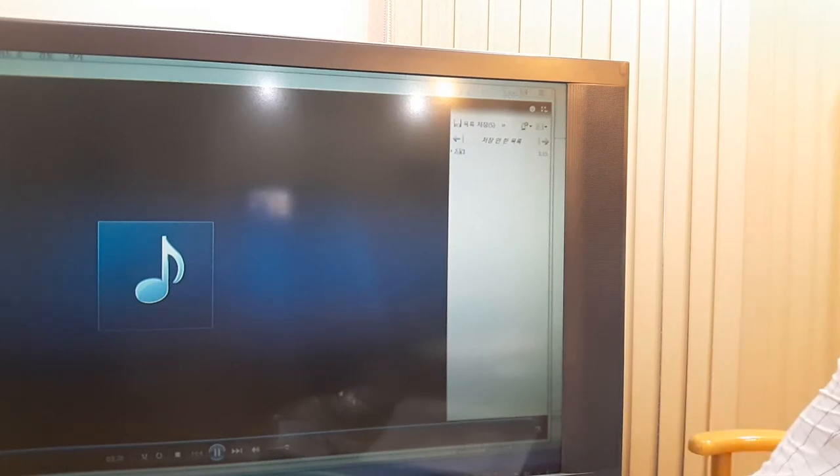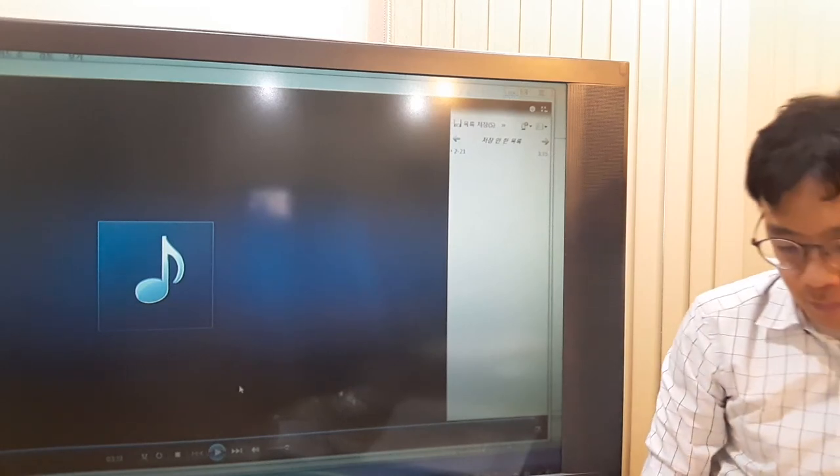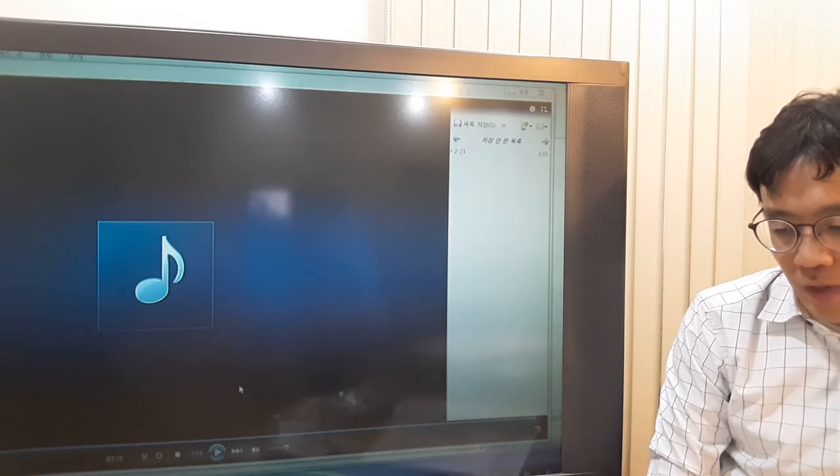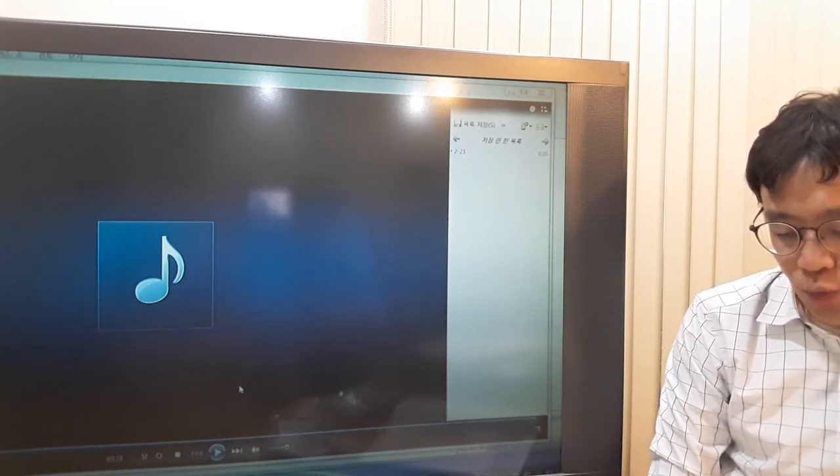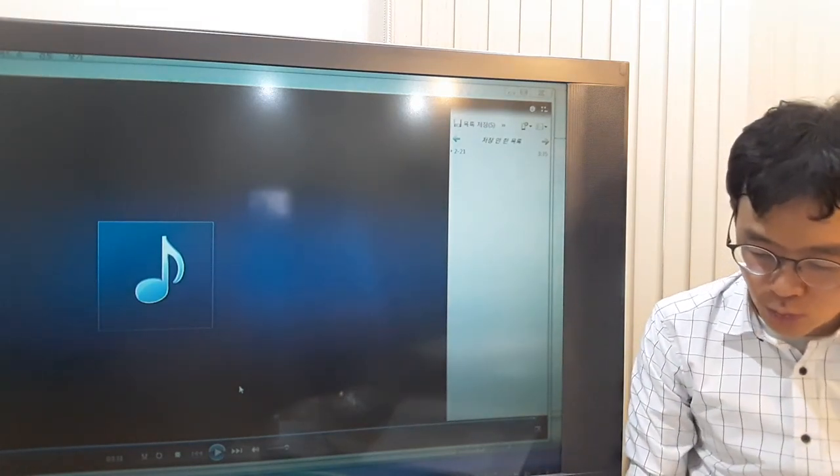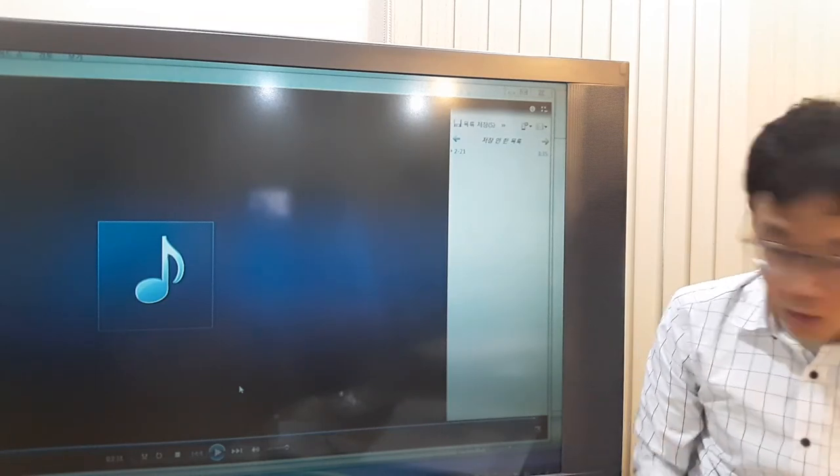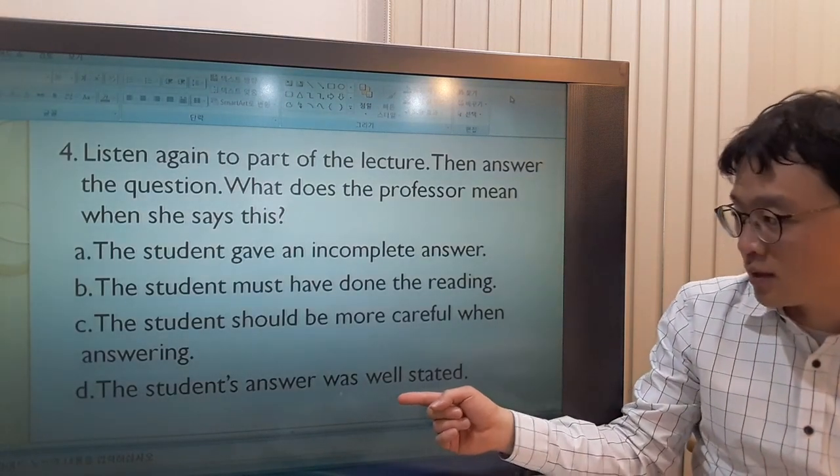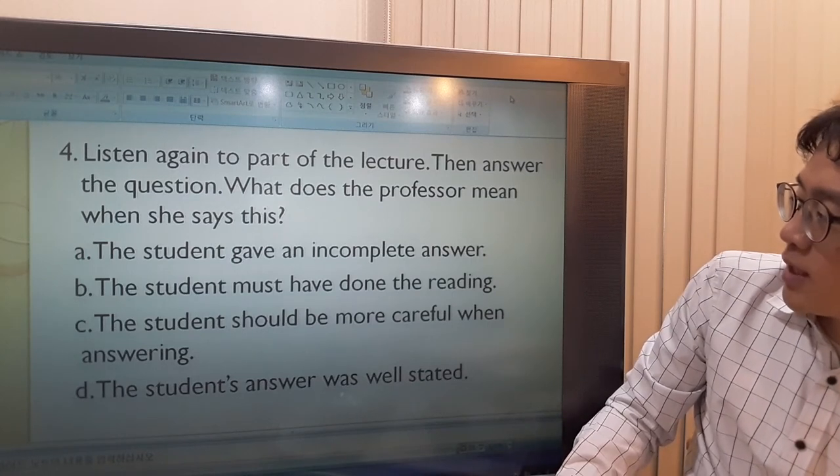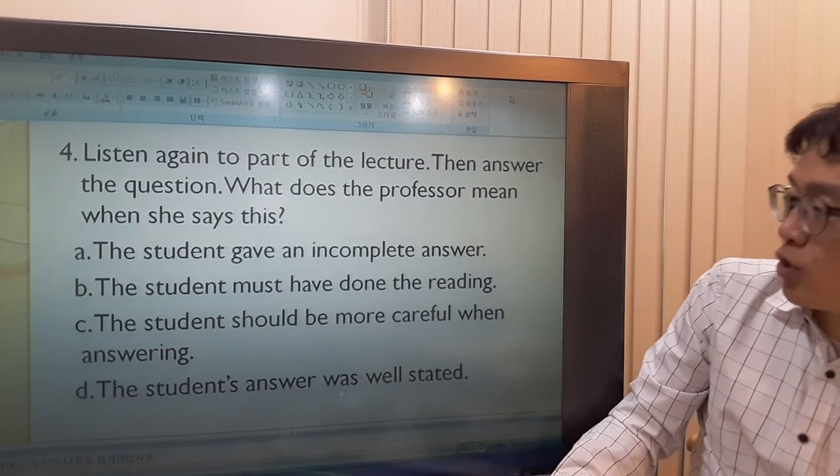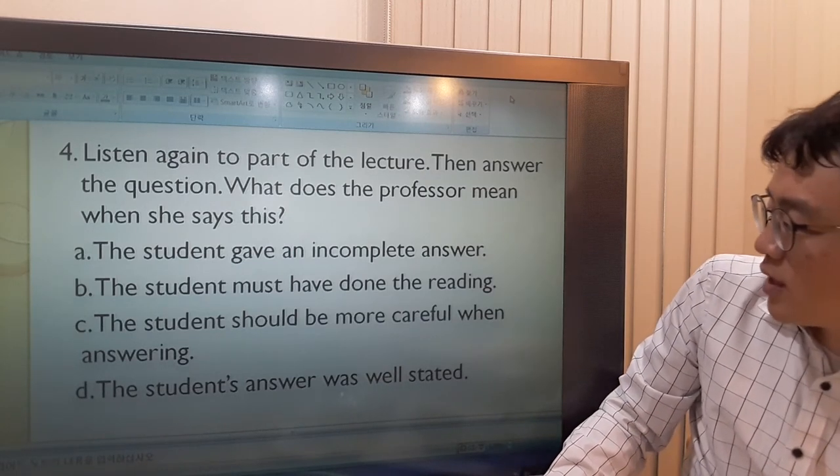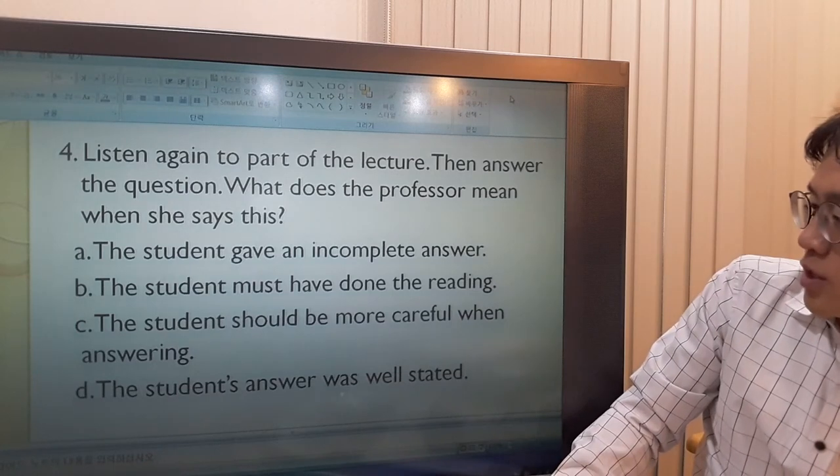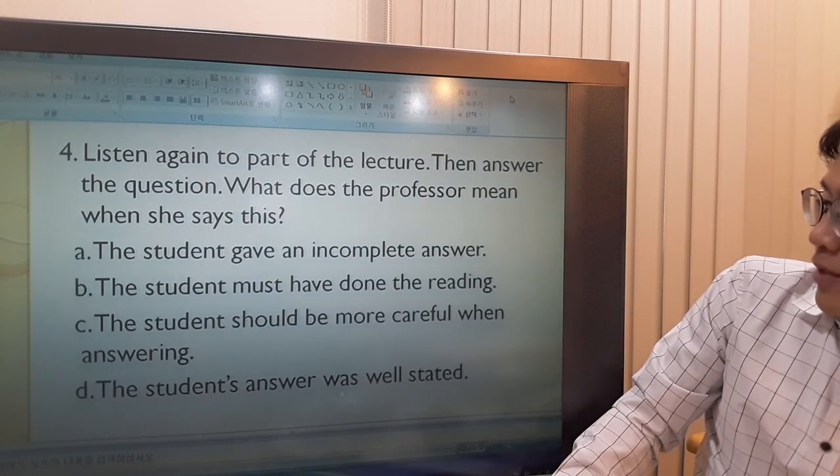What was succinct mean? It means something is explained clearly with few words. So it's short and clear. That's what? Complimenting the student. So which would be the answer? The student's answer was well stated. Let's look at other options. The student gave an incomplete answer - no, this is the opposite. He gave a good answer. B - The student must have done the reading. This is not very relative. C - The student should be more careful when answering. This is not about that. So the answer would be D.